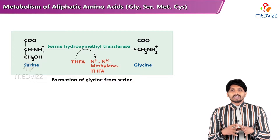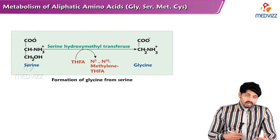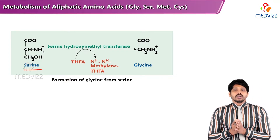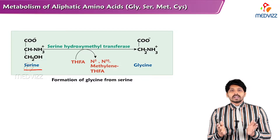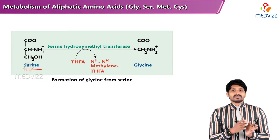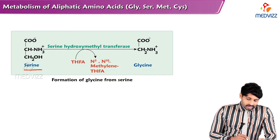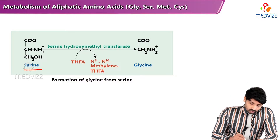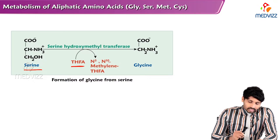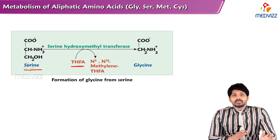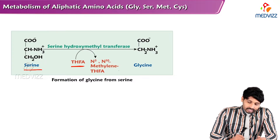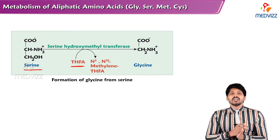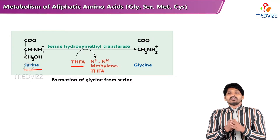We'll first see the synthesis part — the anabolism of glycine. The main contributor in making glycine is the amino acid serine, a hydroxyl group-containing amino acid. The conversion between serine and glycine is reversible. The main enzyme is serine hydroxymethyltransferase, which is a folic acid-dependent enzyme. Tetrahydrofolic acid takes up a hydroxymethyl carbon from serine, converting it to N5,N10-methylene tetrahydrofolate, and converts serine into glycine.